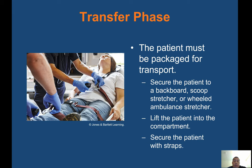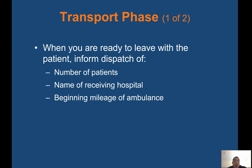The patient must be packaged for transport — secure the patient to a backboard or scoop stretcher, wheel to the ambulance stretcher, lift the patient into the compartment, and secure with straps. Always have seatbelts on the patient: normally three sets — one by the legs, one by the thighs or waist, and a chest harness. When ready to leave, inform dispatch of the number of patients, the receiving hospital, and beginning mileage. If you have a family member or fire personnel riding with you, dispatch needs to know how many people are in the ambulance.